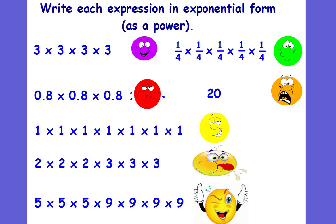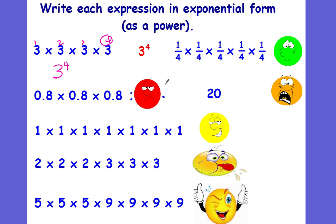So we're going to write each expression in exponential form, or as a power. What number is being repeated? The 3 is being repeated — so that is our base, that's the big number. How many times is it being repeated? 1, 2, 3, 4 times. This is your exponent, which is raised and to the right of the 3, and it's smaller than the 3. We would say this is 3 to the 4th power.